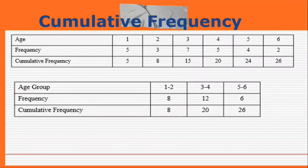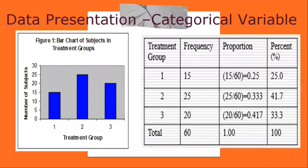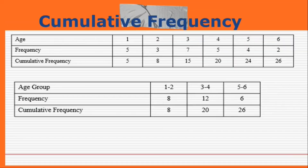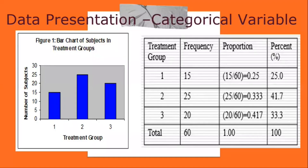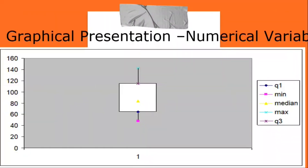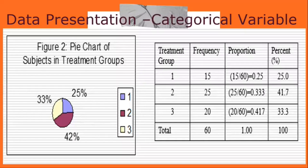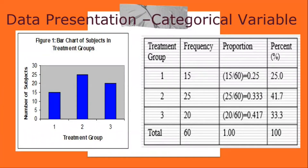Data presentation: there are two types of statistical presentation of data — graphical and numerical. In graphical presentation, we look for the overall pattern and for striking deviations from that pattern. The overall pattern is usually described by shape, center, and spread of the data. An individual value that falls outside the overall pattern is called an outlier. Bar diagrams and pie charts are used for categorical variables; histograms, stem-and-leaf plots, and box plots are used for numerical variables.